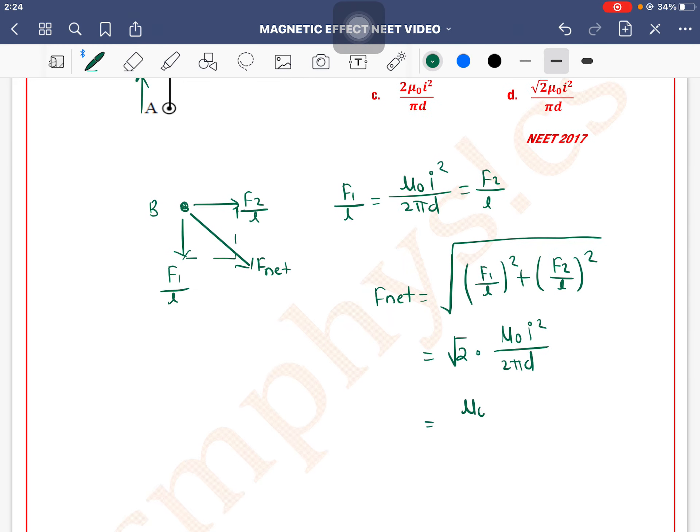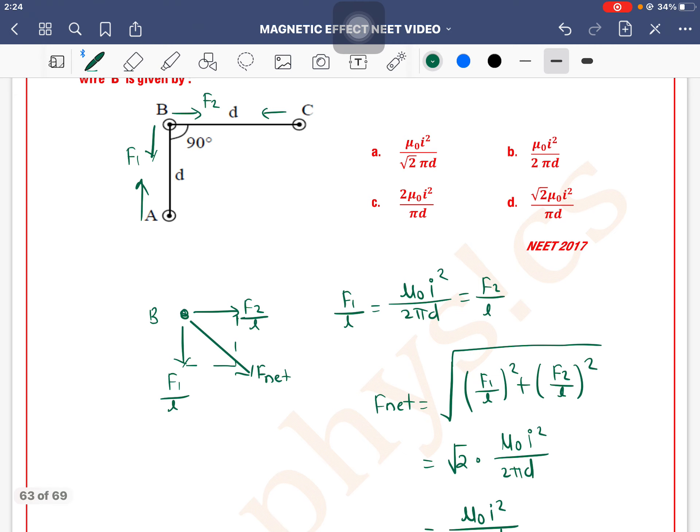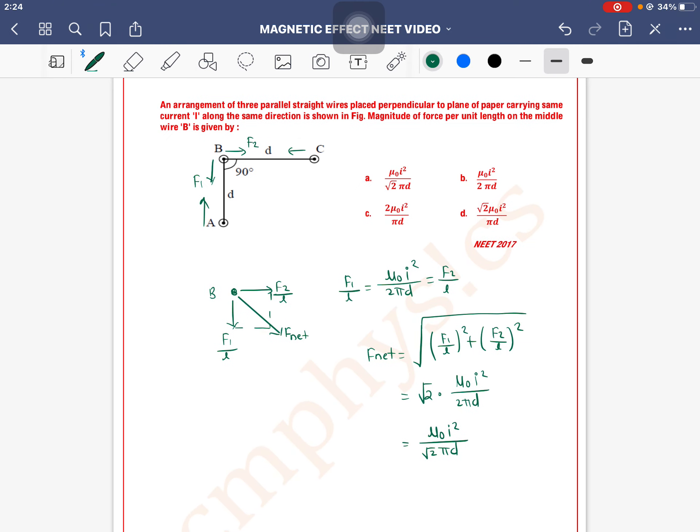μ₀I² divided by 2πD. Now this 2 will cancel. So it will come μ₀I² divided by root 2 πD. μ₀I² divided by root 2 πD, which means Option A is the correct one, right?